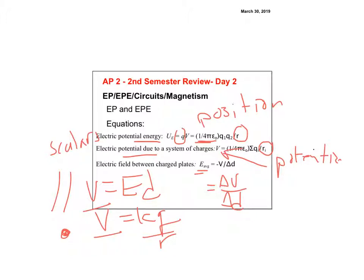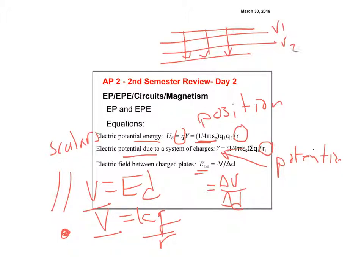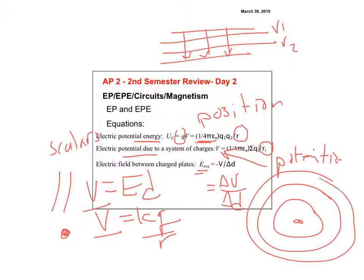For a parallel plate capacitor, the E-field points in one direction and the equal-potential lines are perpendicular. For a point charge, the equal-potential lines form circular patterns, which is why we use KQ/R. Don't use the point-charge formula for the parallel plate, and vice versa. These are scalars, so worry about positive or negative, not direction.